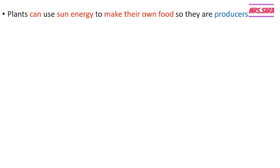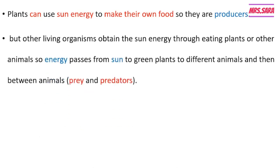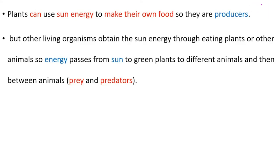Plants can use sun energy to make their own food, so they are producers. Other living organisms obtain the sun's energy through eating plants or other animals. Energy passes from the sun to the green plants, to different animals, and then between animals — the prey and predators.